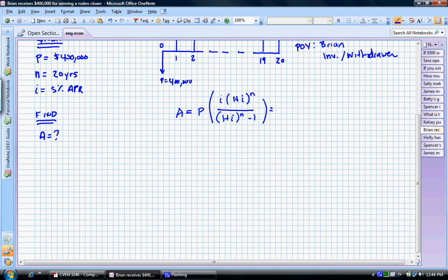So, let's add our values in and solve. We have $400,000. We're going to multiply by our interest rate, which is 0.05. 1 plus 0.05 to the n, which is 20 years,